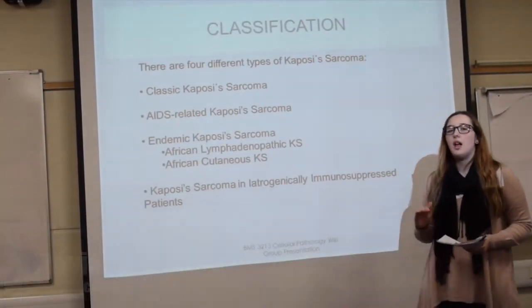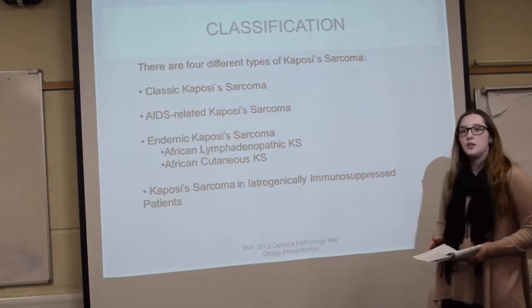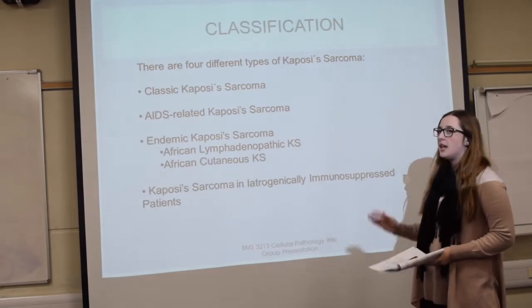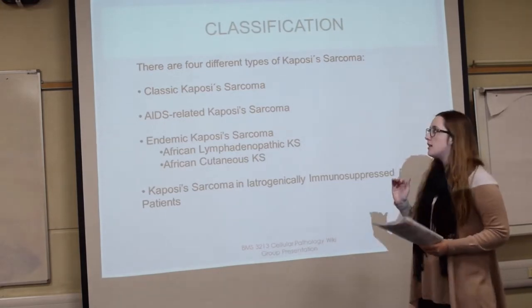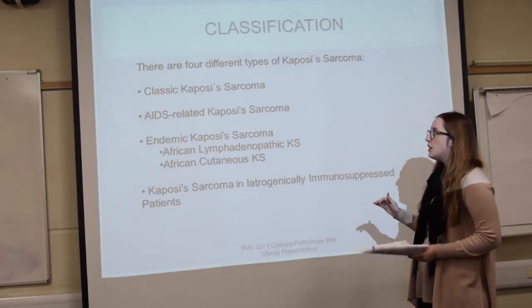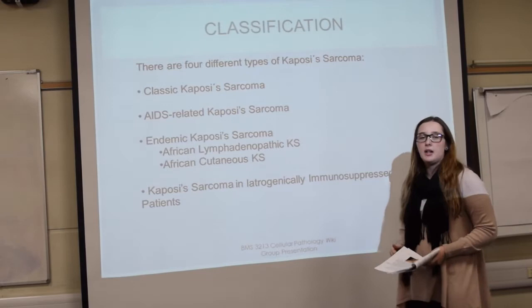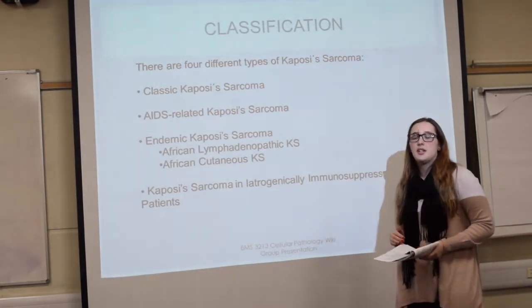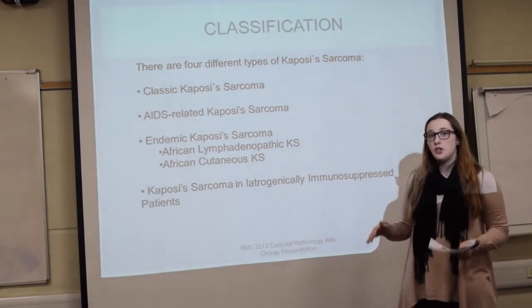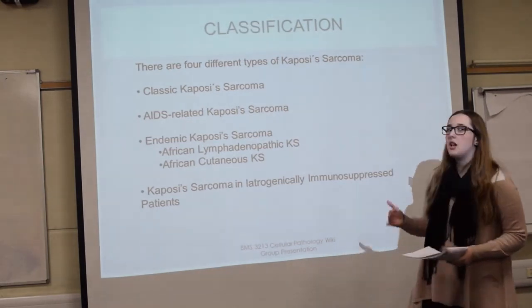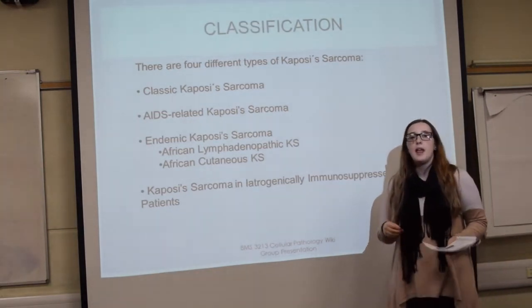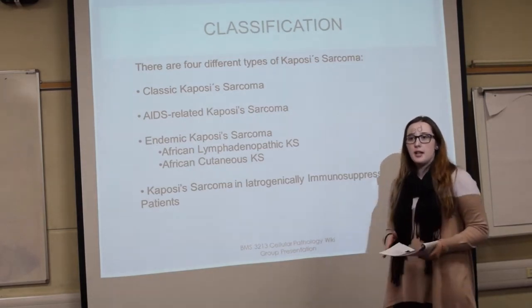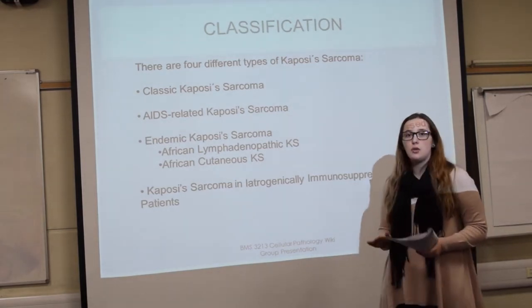There are four different types of Kaposi's sarcoma, all with independent histories and different prognoses. The first is classic KS, which is a non-aggressive type. It is seen in men older than 50 years old, usually in regions like the Mediterranean and Eastern Europe. It affects the lower extremities, and the patches appear bluish-black and can develop into nodules.